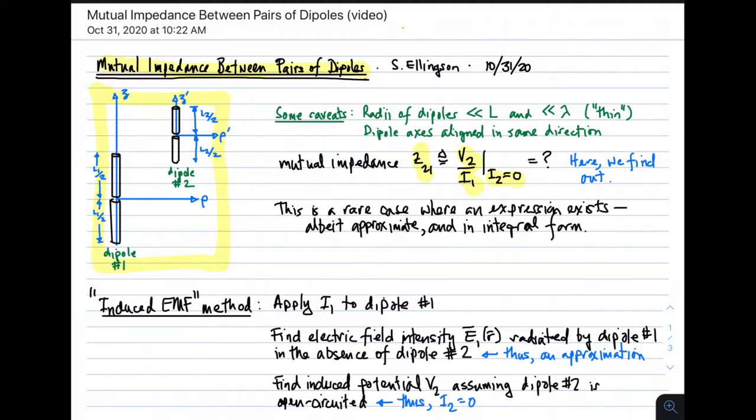Before we begin, some caveats. First, we are treating the case where the radii of the dipoles is much less than the length and much less than the wavelength. We refer to this as the thin dipole case. Also, we're interested specifically in the case where the dipole axes are aligned in the same direction. The axes are parallel, but doesn't mean the dipoles are arranged in echelon or necessarily collinearly. Any of those possibilities is allowed, just as long as the axes are parallel.